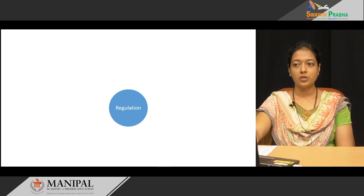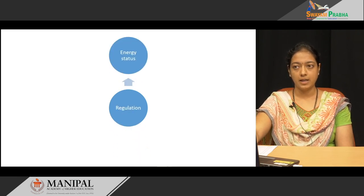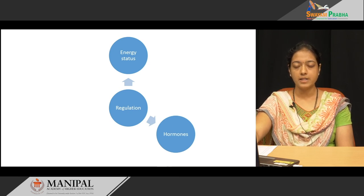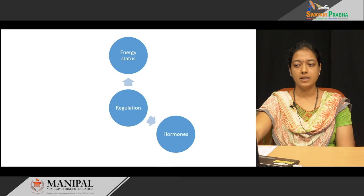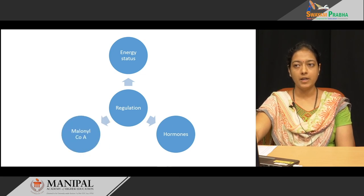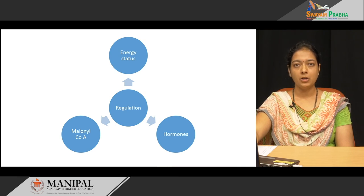Beta oxidation is regulated mainly by the energy status. Hormones also play a role: insulin inhibits fatty acid oxidation, whereas glucagon increases it. Malonyl-CoA inhibits the enzyme carnitine acyl-transferase-1 and prevents the transport of activated fatty acid into the mitochondria, thereby blocking beta oxidation.